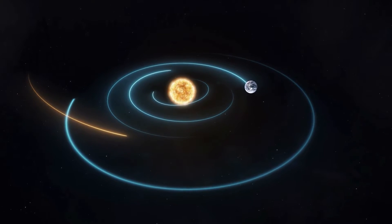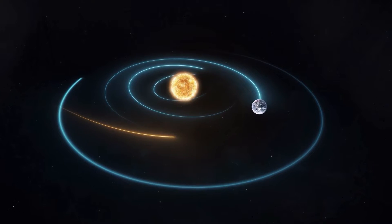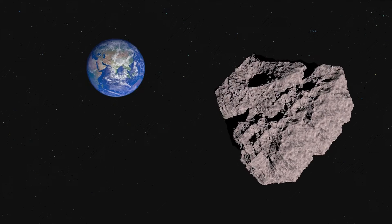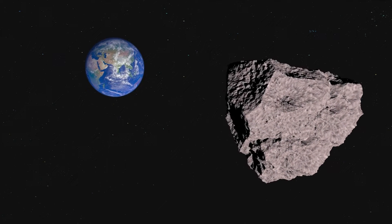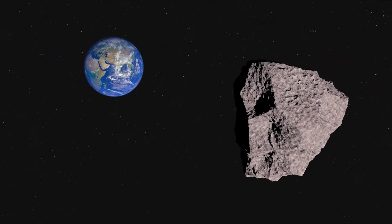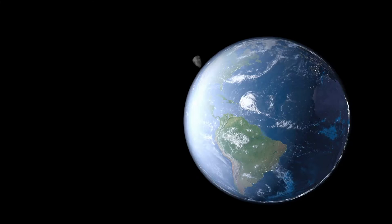The weekend will bring a close flyby of an asteroid the size of the Great Pyramid of Giza, known as the 2022 GU6. The asteroid will pass within 750,000 miles of Earth on Sunday morning at 8:01 a.m. Eastern Time.